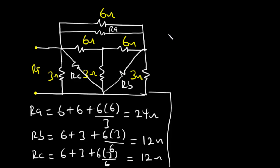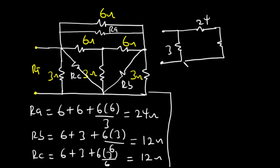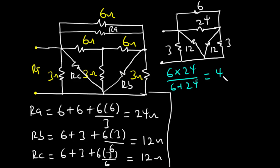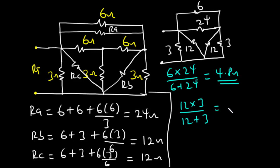We can redraw the circuit. The 6-ohm resistor and the 24-ohm resistor are connected in parallel, so their equivalence is 6 times 24 divided by (6 plus 24), which equals 4.8 ohms. The 12-ohm resistor is in parallel with the 3-ohm resistor, giving 12 times 3 divided by (12 plus 3), which equals 2.4 ohms.